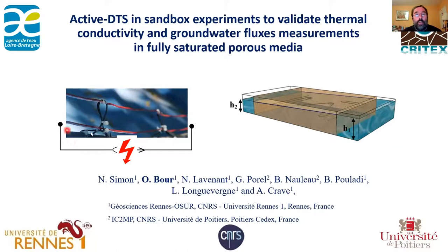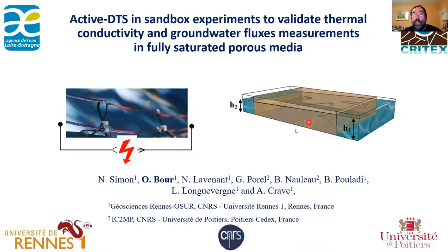The idea is to use active DTS. Active DTS is typically when you are using a heat source in addition to your measurement of temperature through fiber optics — you are also using a heat source. The idea is to use that in a sandbox where you control the flow, and to see if we can really make some measurement of groundwater fluxes and with which accuracy.